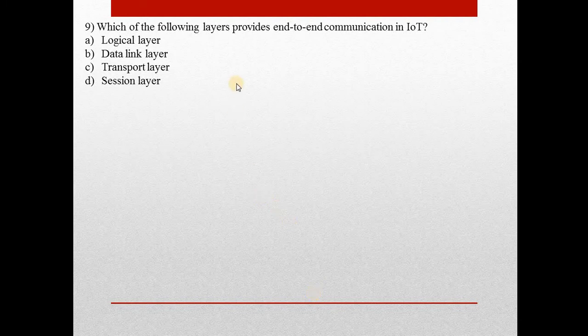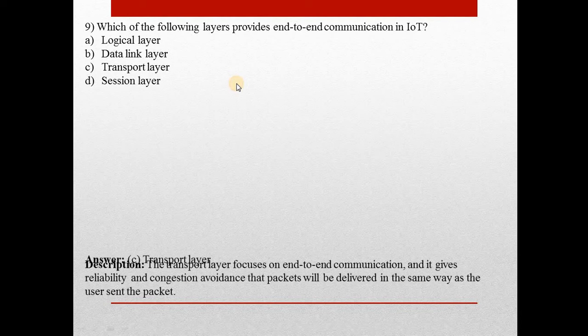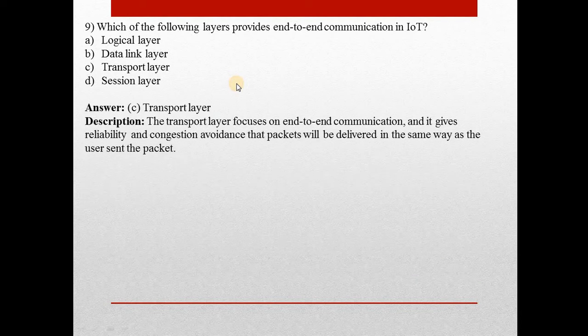Question number nine: Which of the following layers provides end-to-end communication in IoT? Answer is C — Transport layer. It focuses on end-to-end communication and gives reliability and congestion evidence that packets will be delivered in the same way as the user sent the packet.